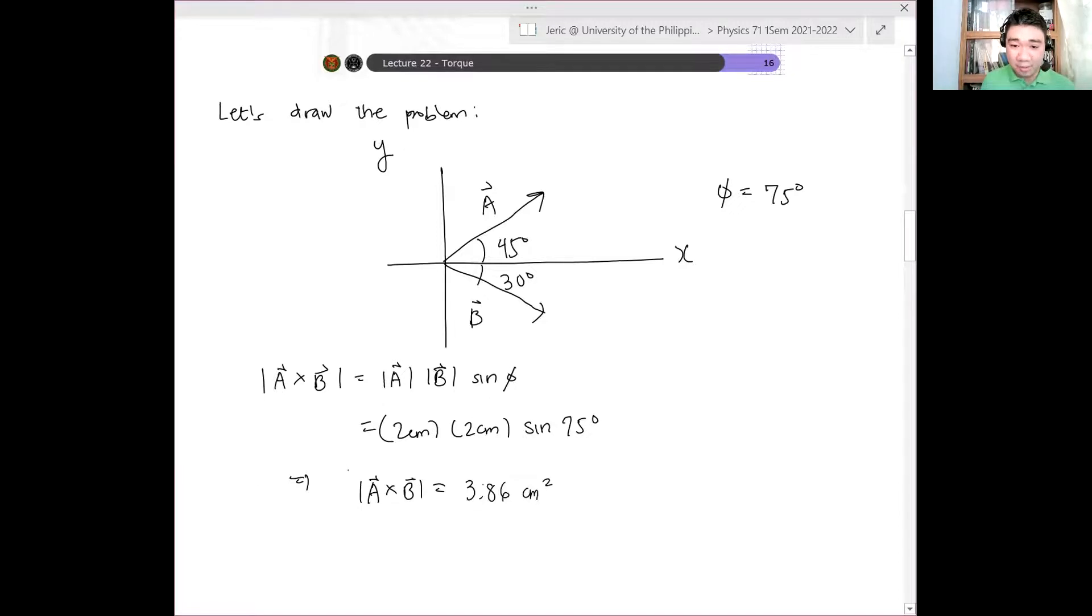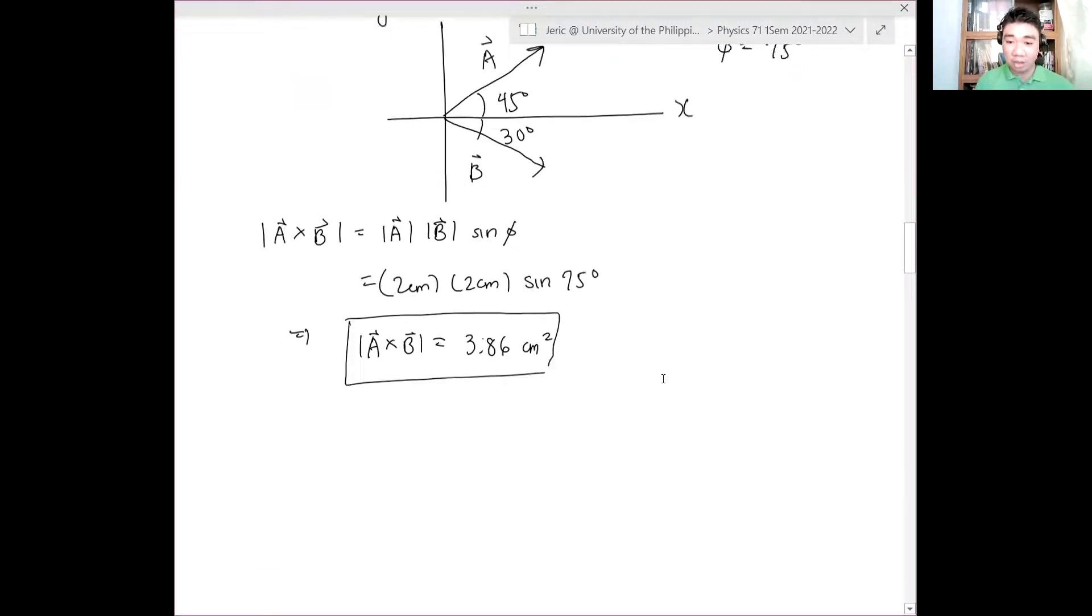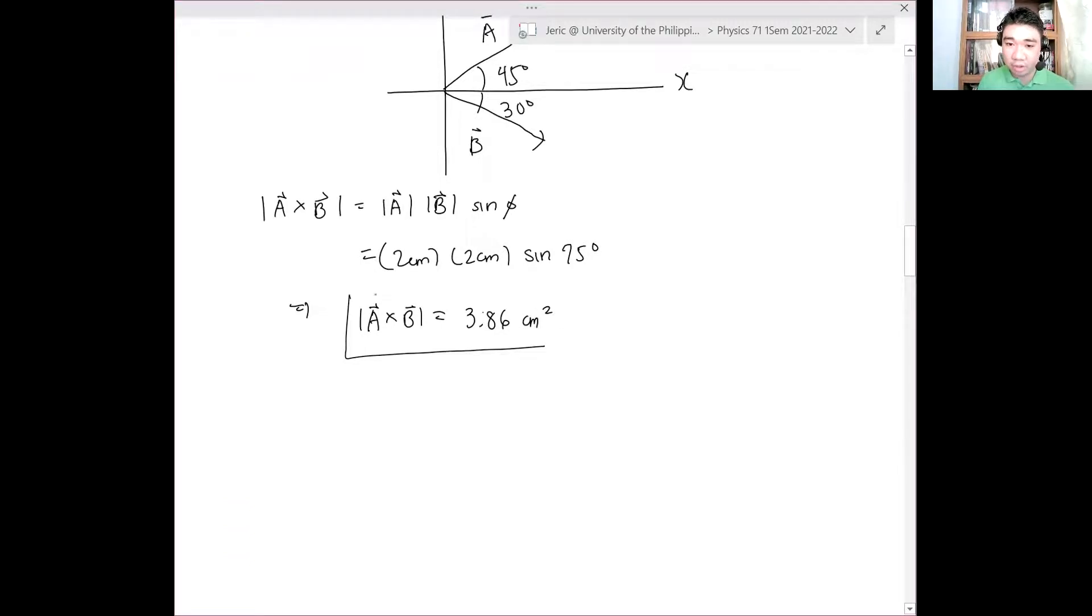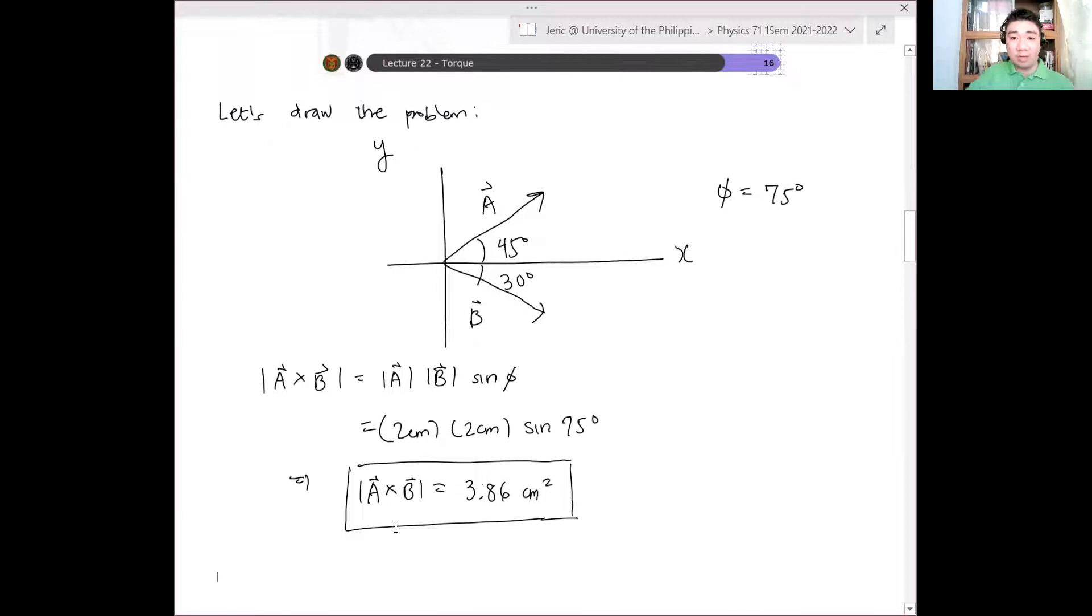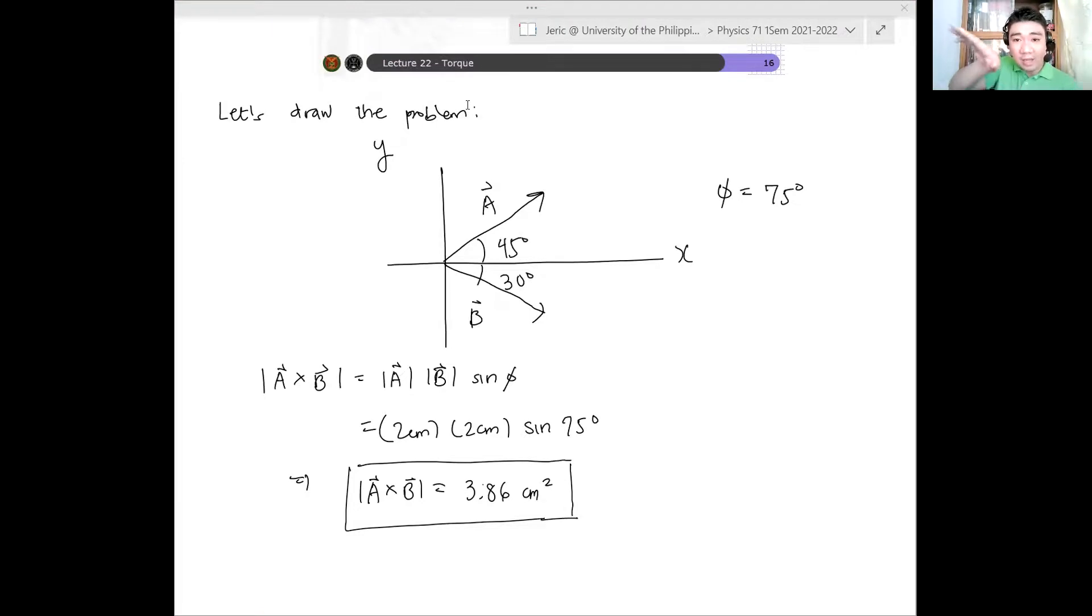What about the direction? What about the direction? If you use the right-hand rule, remember it's A cross B. A cross B - into the paper, right? Again, we have A cross with B - into the paper. Into the paper. A cross B into the paper.